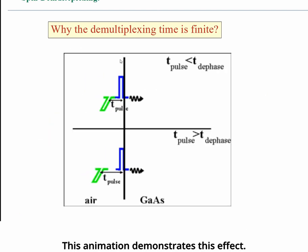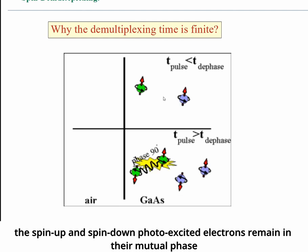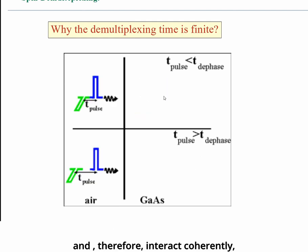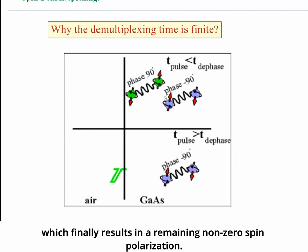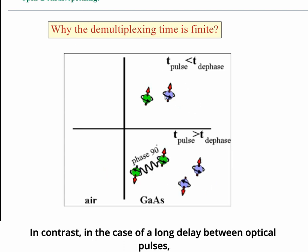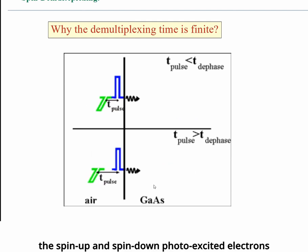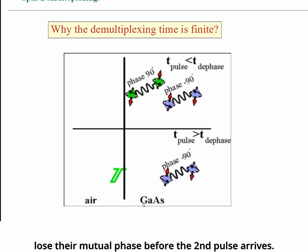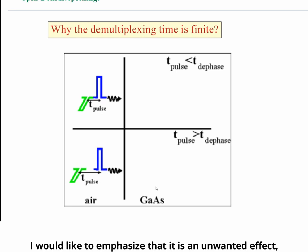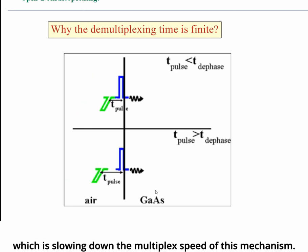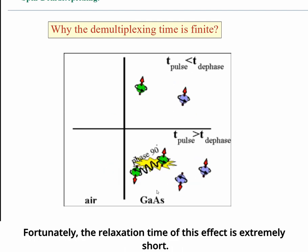This animation demonstrates the effect. In the case of a short delay between optical pulses, the spin-up and spin-down photo-excited electrons retain their mutual phase and therefore interact coherently, finally resulting in a remaining non-zero spin polarization. In contrast, in the case of a long delay, the spin-up and spin-down photo-excited electrons lose their mutual phase before the second pulse arrives, so there is no coherent interaction and no remaining spin polarization. This is an unwanted effect that slows down the demultiplexing speed. Fortunately, the relaxation time of this effect — called the dephasing time — is extremely short.